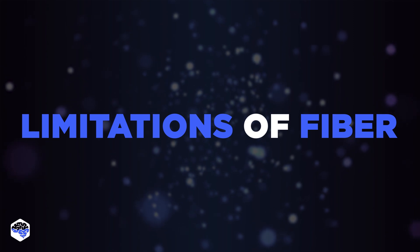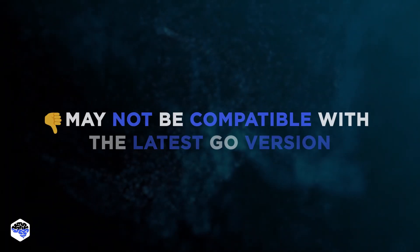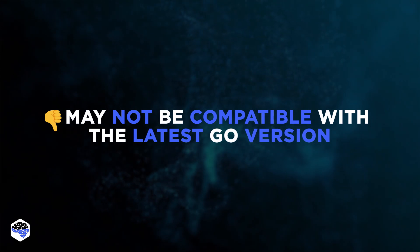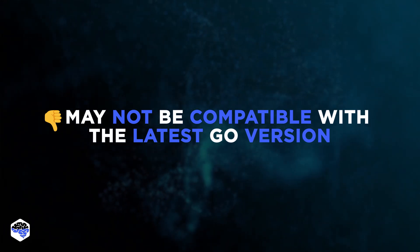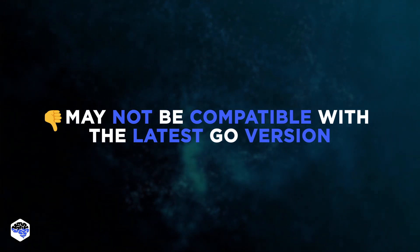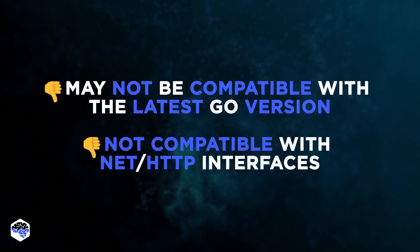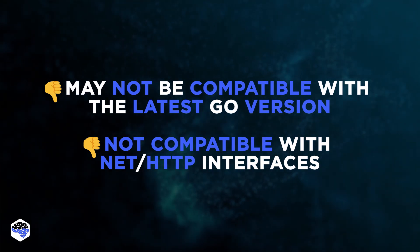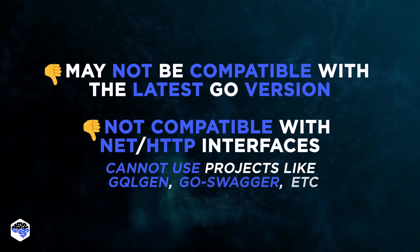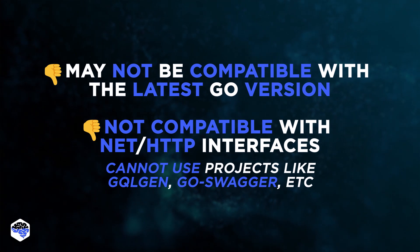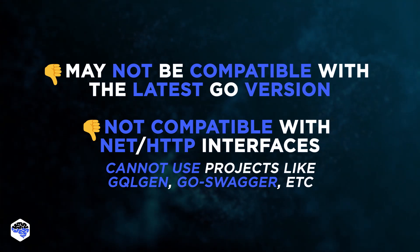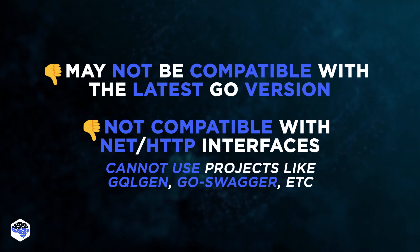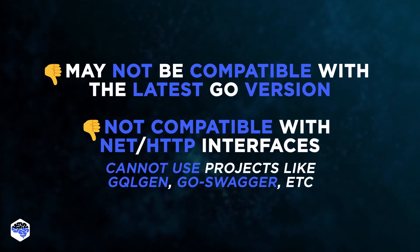Despite notable advantages, Fiber has some limitations. First, due to Fiber's usage of unsafe, the library may not always be compatible with the latest Go version. Besides, it's not compatible with net/http interfaces. This means you won't be able to use projects like GQLGen, Go Swagger, or any others which are part of the net/http ecosystem.